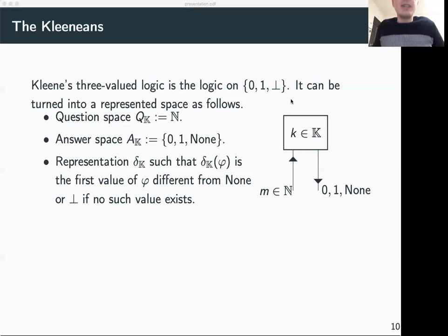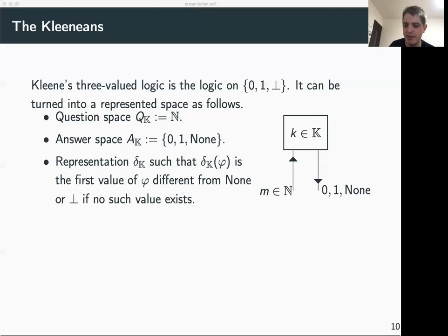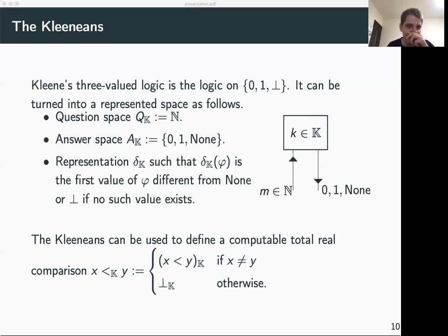This definition is useful because we can often use it to delay Boolean decisions to some later point in time and extend partial Boolean decisions to total functions, using this additional natural number parameter m. The representation allows us to return none for some time — delaying the decision — and then say true or false, or if there's no decision, always return none. Partial Boolean functions can often be extended to total functions on the Kleenians.